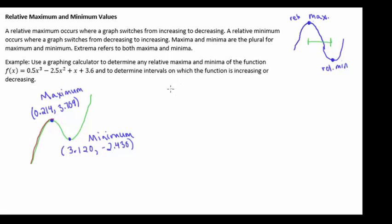Then we're increasing again from our minimum to positive infinity, so that union symbol is just saying that both of these sets are increasing. So from 3.120 to positive infinity, we are increasing.